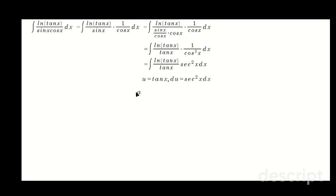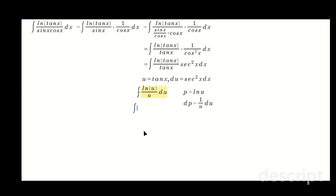So now we will have the antiderivative of ln of u over u, du. So maybe this is not again obvious. What you can do is the following: just let p equal ln u, then dp equals 1 over u du, which we have here. So you're going to have this antiderivative. ln u is p, and then 1 over u du is dp. So we can anti-differentiate this.